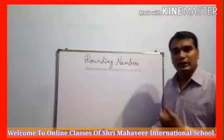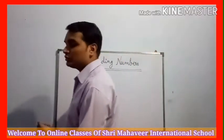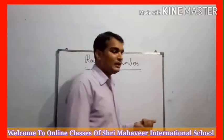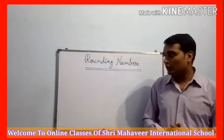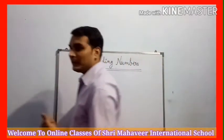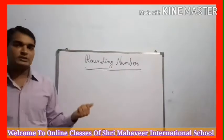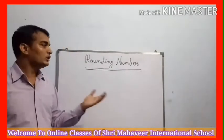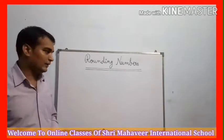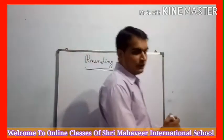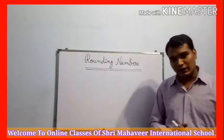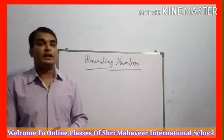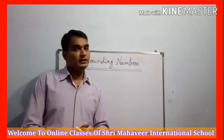Exact तो 97 है, but उसका जो estimation है वह 100 rupees है. तो Rounding Numbers इस पर depend जो topics होते हैं: nearest 10, nearest hundred, nearest thousand, ten thousand - वो मैं आज आपको सिखाने वाला हूं. उन में से मैं आपको आज nearest 10 और nearest hundred का topic सिखाने वाला हूं. Listen carefully and try to understand the topic.